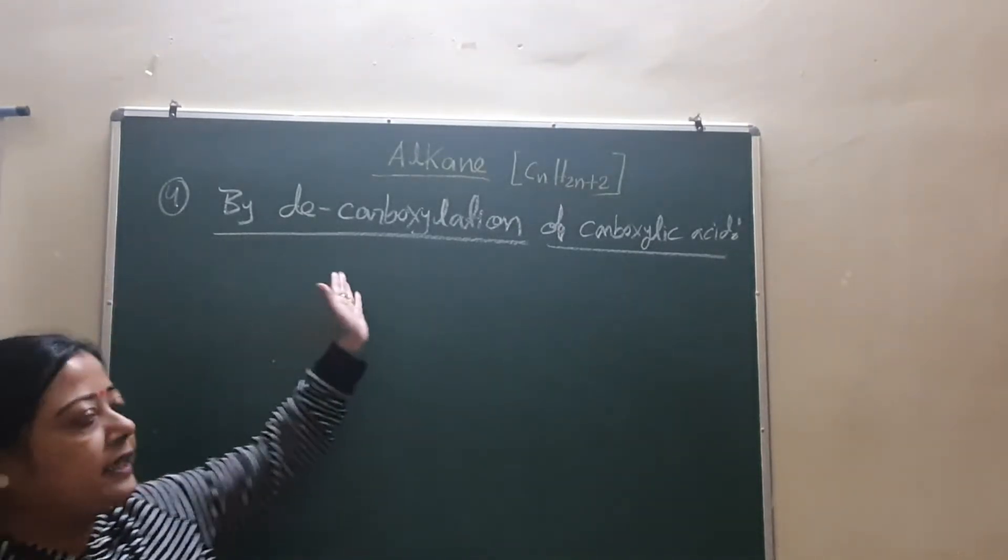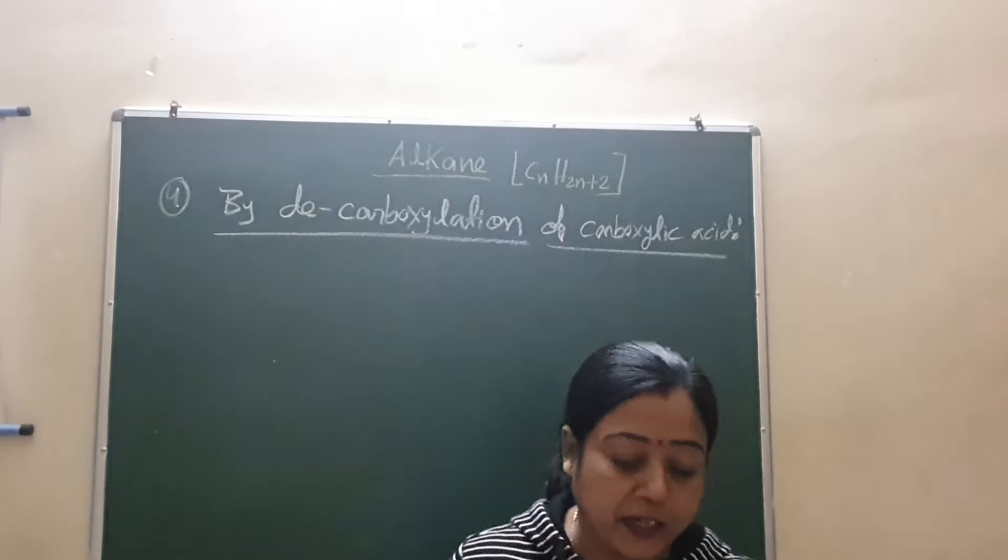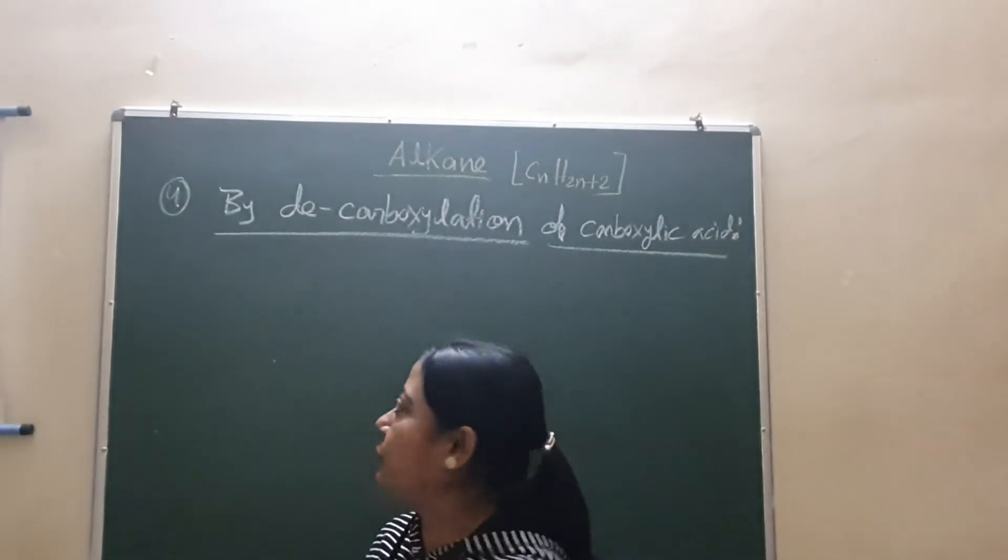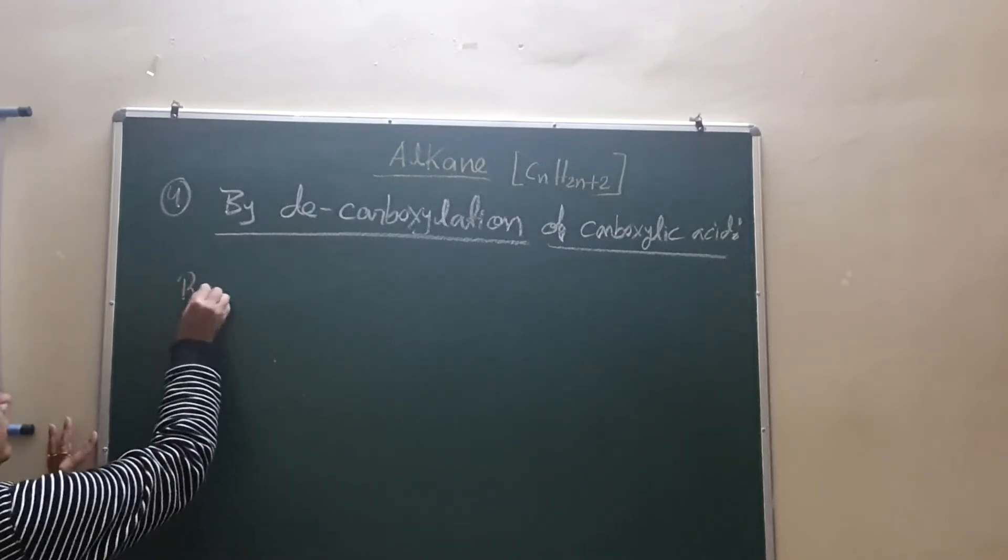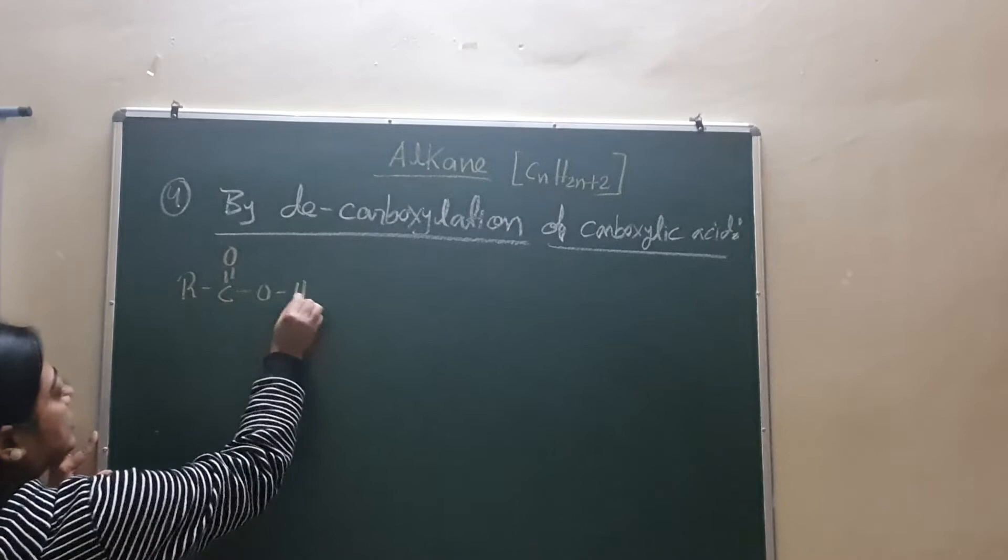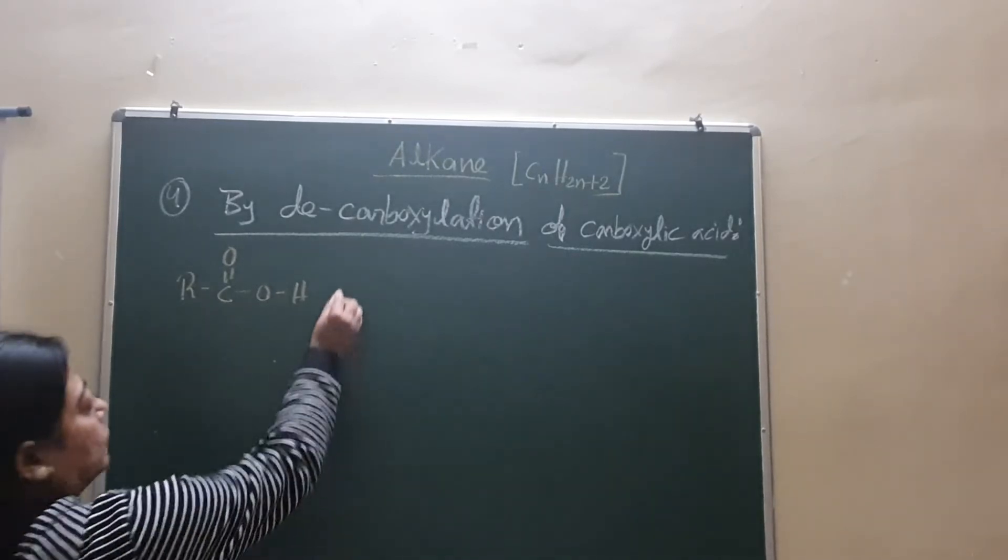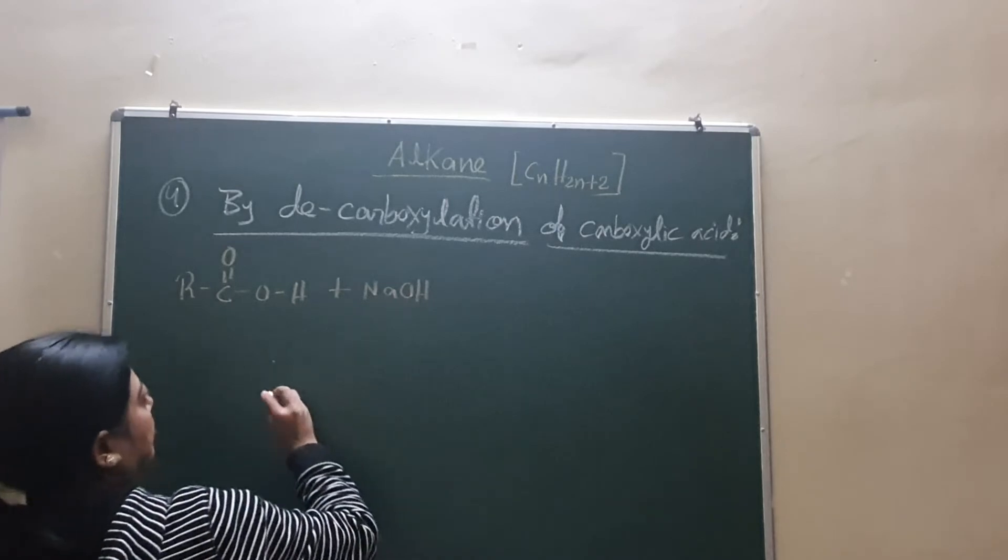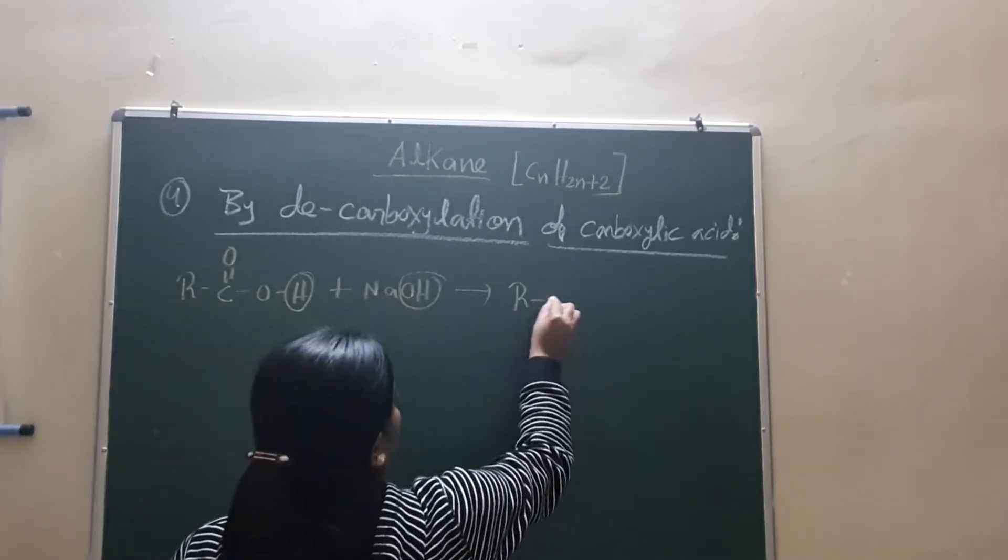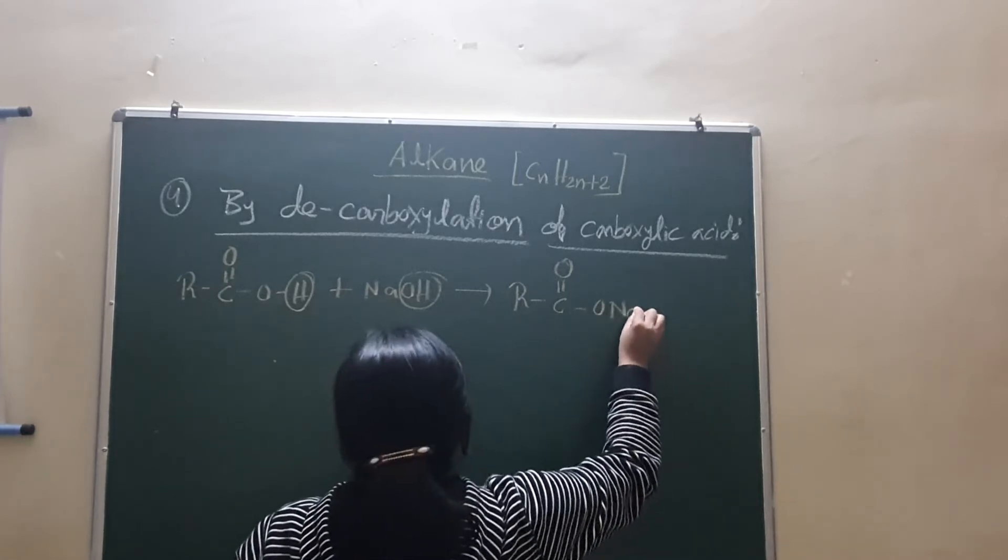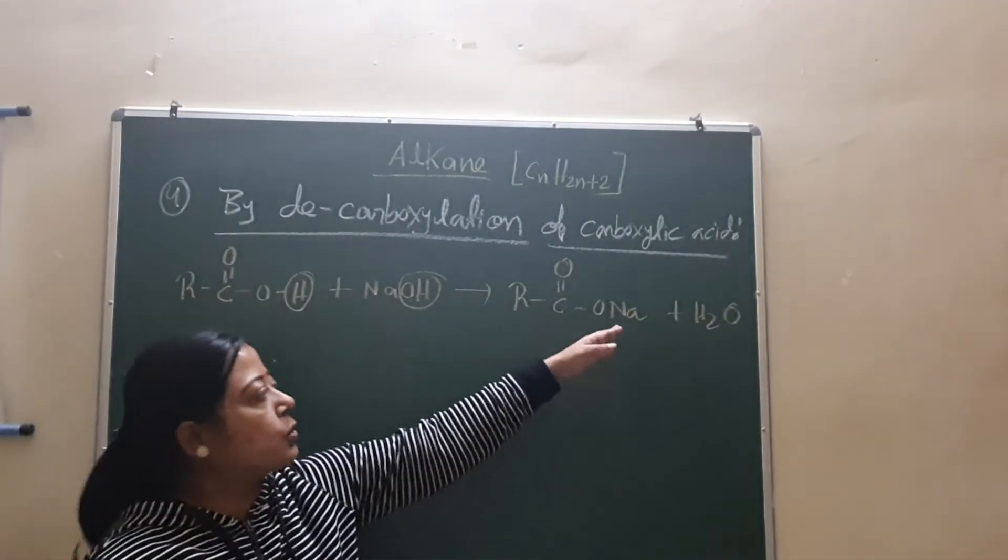Now the fourth method: by the decarboxylation of carboxylic acid. Decarboxylation, 'de' means to remove something. What will we remove? We will remove the carboxyl group. Carboxyl means COOH, CO2 group we will remove. Actually we'll start from the sodium salt of the carboxylic acid. What is actually carboxylic acid? R-C double bond O-OH. This is a carboxylic acid. Now this is acid, so if you do the reaction with sodium hydroxide or any base, this hydrogen of acid and OH of base will combine and form water. Join the rest: R-C double bond O-O-Na plus H2O water. What is this? This is the sodium carboxylate or you can say sodium salt of the carboxylic acid.